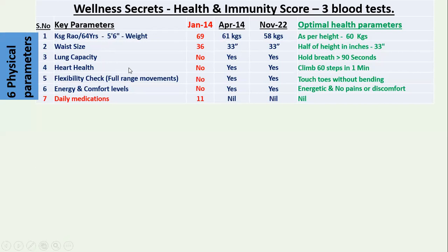Lung capacity: take a full breath, hold it for more than 90 seconds — if you can do that, you pass. Next is heart health: climb 60 steps in one minute, which is about three floors of a building. Flexibility check: if you're able to touch your toes without bending your knees, and achieve full range of movements across all your joints — bending, rotating — that's a pass.